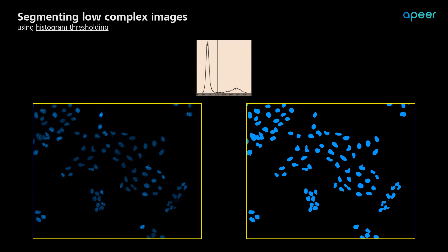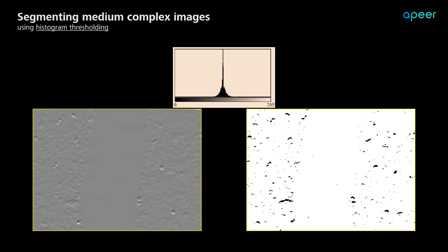But the same approach will not work for medium-complex images. Here, both the smooth region and the texture regions have very similar pixel values, making it impossible to discriminate them just by using histogram values. This is where extracting features that quantify the texture and applying traditional machine learning can be very efficient.